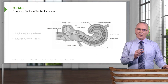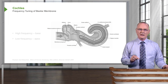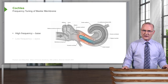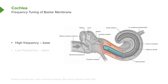The cochlea along the basilar membrane is frequency tuned. High frequency sounds cause the basilar membrane at the base of the cochlea to vibrate — that region is more sensitive to high frequency sound waves. This causes movement of the hair cells embedded in the tectorial membrane, leading to depolarization. Low frequency sound waves correspond to the apex of the cochlea, where that portion of the basilar membrane vibrates in response. The rest of the basilar membrane is fine-tuned from high to low frequency between those regions.